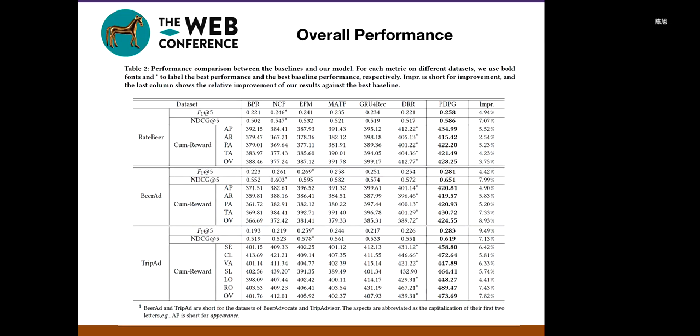From the overall performance, we can see on different datasets, NCIF, EFM, and METIF perform better than before in most cases, which agrees with the previous work. It's interesting to see that sequential model GRU4Rec did not achieve superior performance than the non-sequential ones. Encouragingly, by incorporating multi-objective rewards into the DPG framework, our model can achieve the best performance on all the datasets.